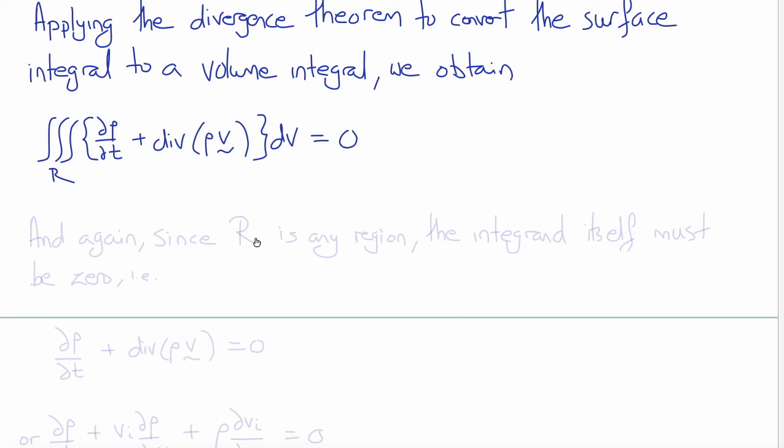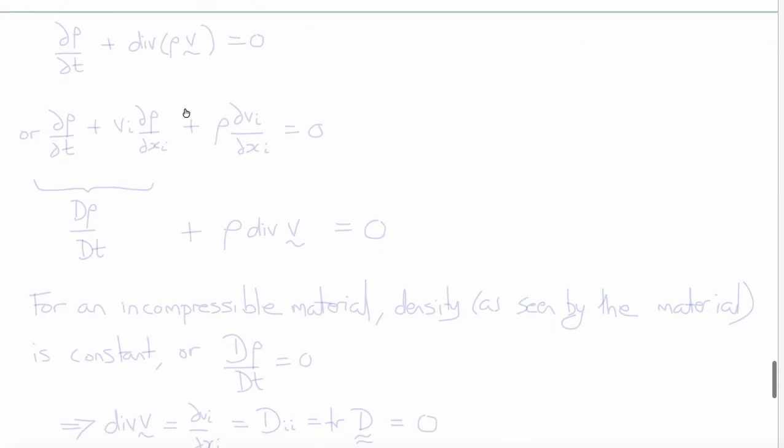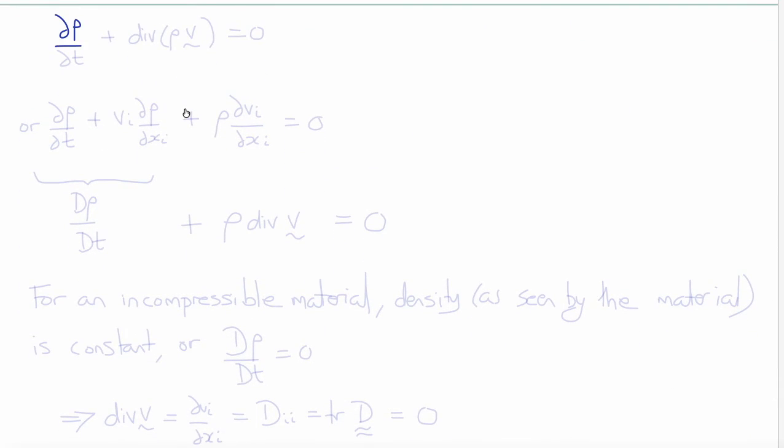And again, since our region R is entirely arbitrary, that means the integrand itself, the terms inside the integral, must be identically satisfied. This term must be identically 0. And so we get del rho del t plus div rho V is equal to 0. And this is our first version of the Eulerian form of conservation of mass.